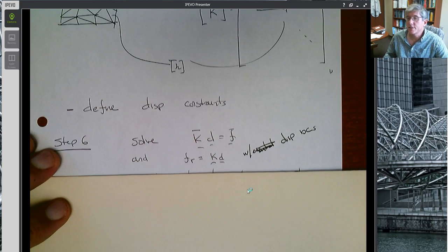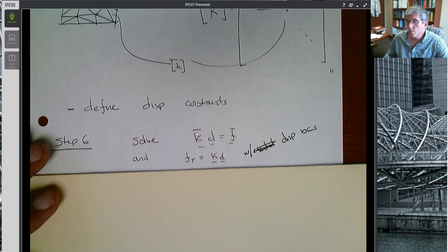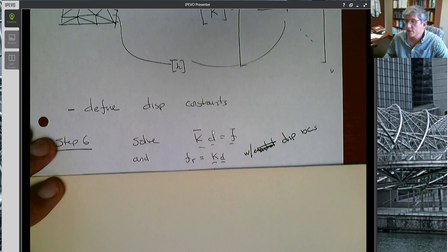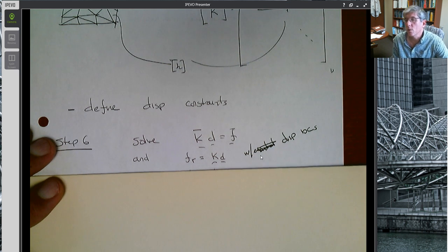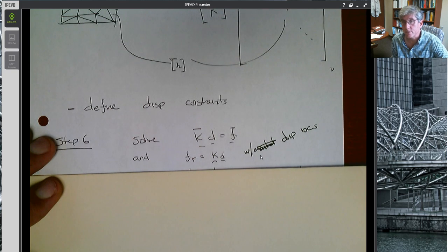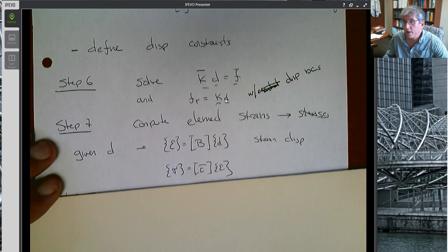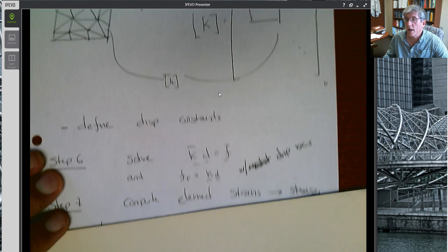Step six is to solve the system. Now we have a global stiffness matrix and a right-hand side vector for the external forces, and we want to solve for d. This is going to turn out to be a singular system of equations because we haven't invoked displacement boundary conditions, we haven't said where it's fixed. In fact, what we need to do is solve this system Kd equals f with a particular set of displacement boundary conditions. Now we find d, the displacement vector that tells us at each one of these nodes what is the displacement at x and y.